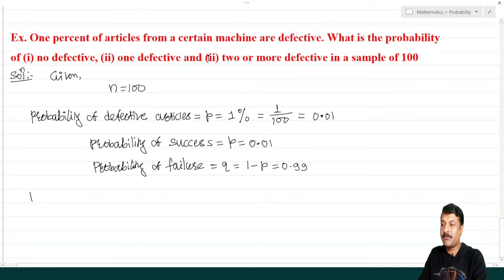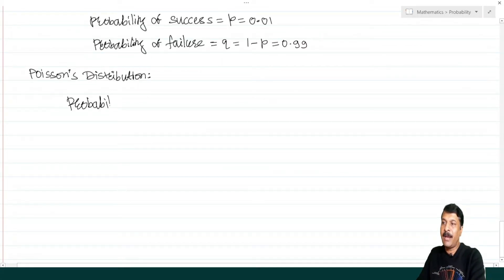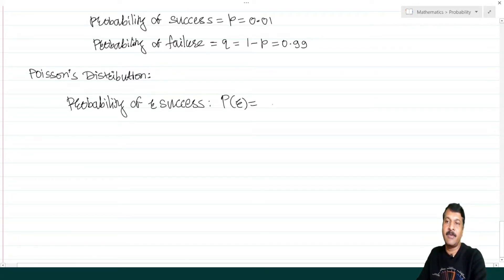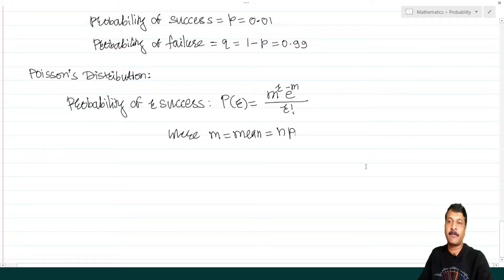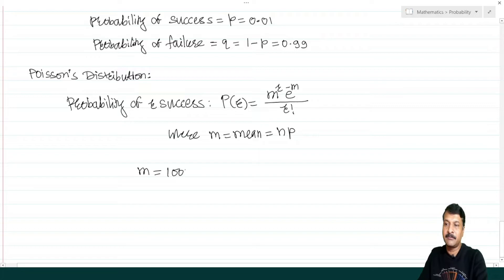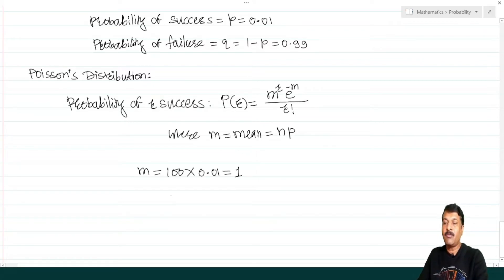Poisson's distribution formula: P(r) = (m^r × e^(−m)) / r!, where m is the mean. First find the mean: m = np = 100 × 0.01 = 1.